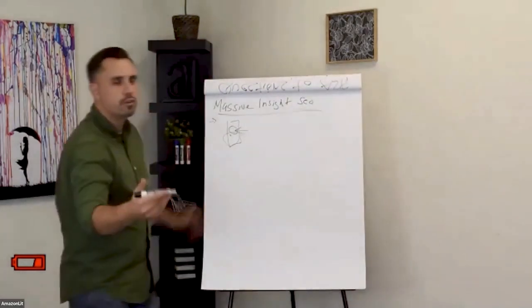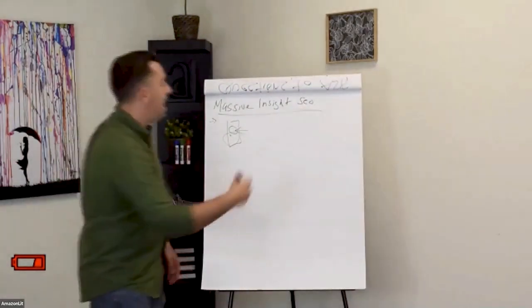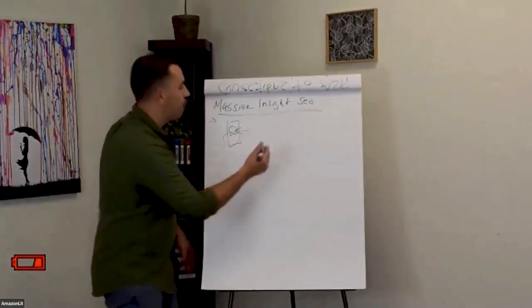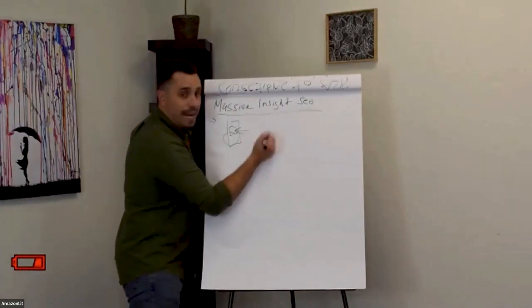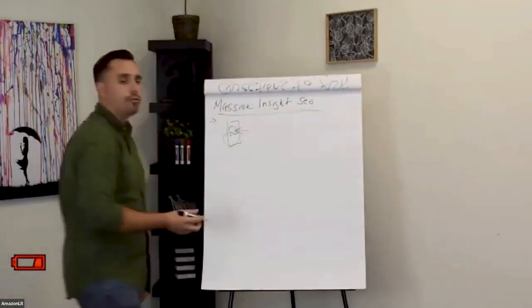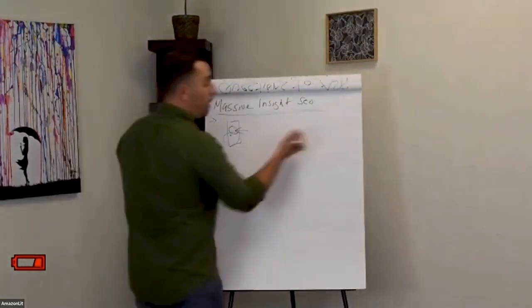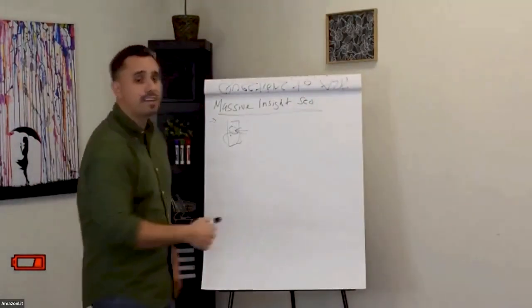Now we're going to go into transparency codes and using different UPCs and different strategies to recreate these listings and remove unauthorized sellers and help with their own distribution chain. So that's going to be huge.